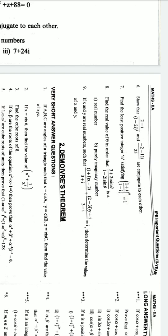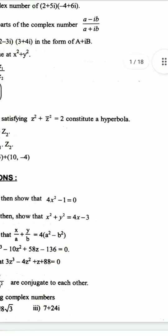Find the real value of theta in order that 3 plus 2i sine theta by 1 minus 2i sine theta is first a real number, b purely imaginary number. Final question: if x and y are real numbers such that 1 plus i into x minus 2i by 3 plus i plus 2 minus 3i into y plus i by 3 minus i equals i, then determine the values of x and y. These are the important questions from complex numbers chapter.